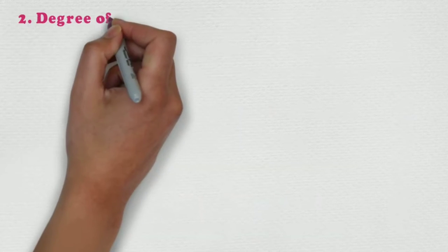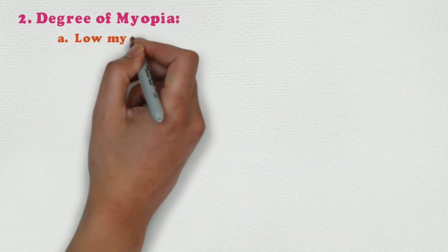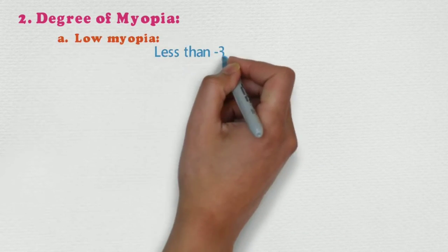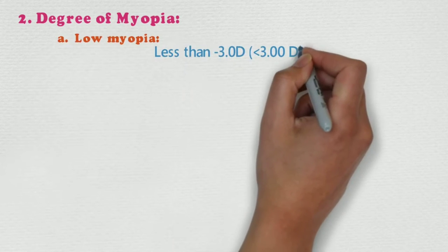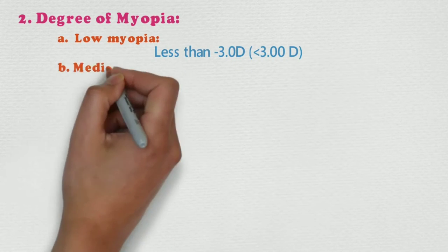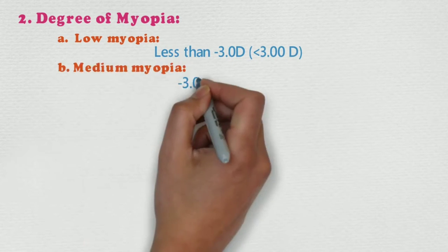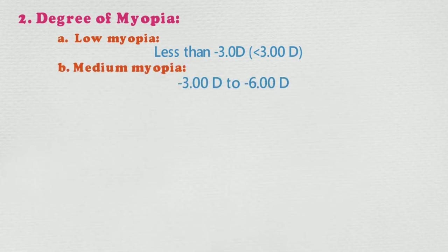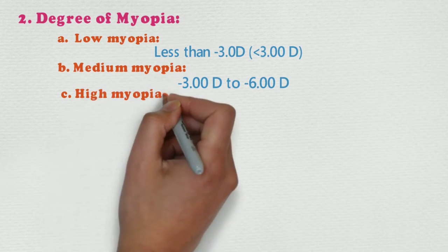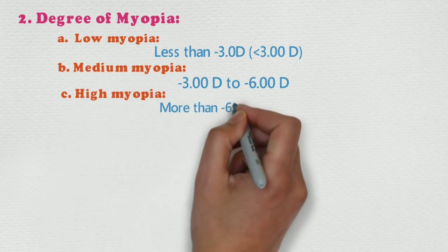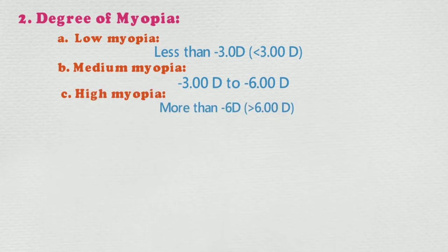2. Degree of myopia. A. Low myopia: less than minus 3 diopters. B. Medium myopia: minus 3 to minus 6 diopters. C. High myopia: more than minus 6 diopters.